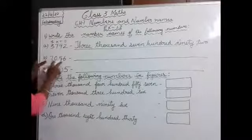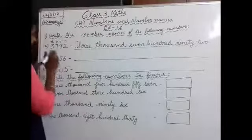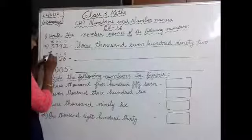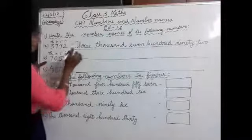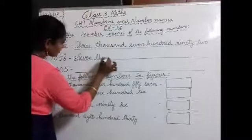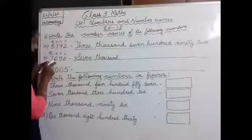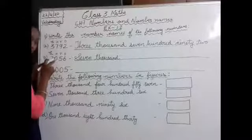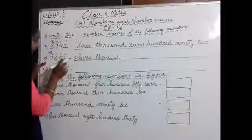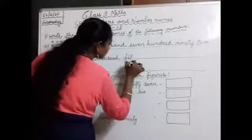Next, 7056. You have to write the number name for 7056. First you have to write ones, tens, hundreds, thousands. So we will start writing the number name. I have written 7000. In the hundreds place, 0 is there, so we will not write anything there. In tens place and ones place, we have 5 and 6. So 7056 is seven thousand and fifty-six.